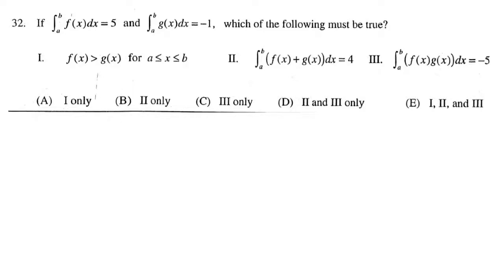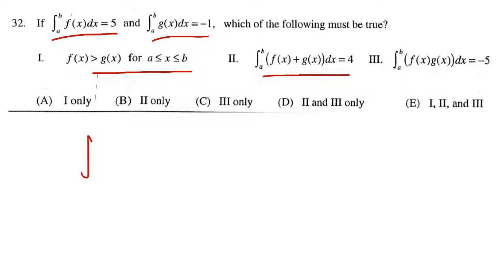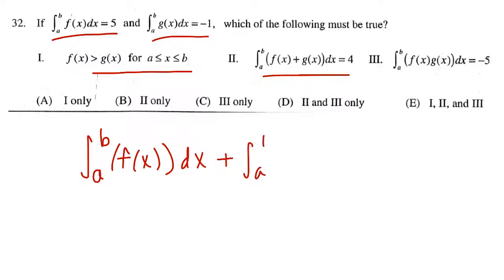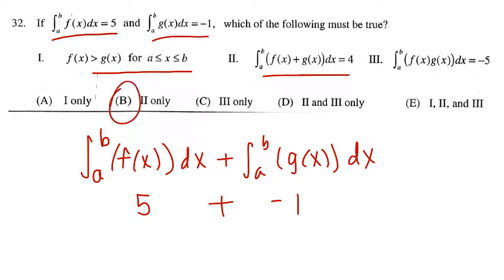For number 32, we're given two facts about an integral of f(x) and an integral of g(x), and we need to determine which of the following must be true. It's from a to b, so we don't know much about the first or third options. Let's focus on the second one, because if we integrate from a to b of f(x) + g(x), that's the same as the integral of f(x) from a to b plus the integral from a to b of g(x). Over that interval, f(x) is 5 and g(x) is -1, so this should be answer choice B.